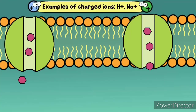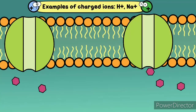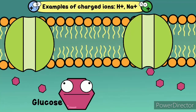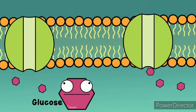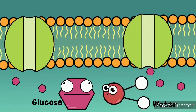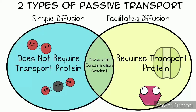Charged ions often require a protein channel in order to pass through. Glucose needs the help of a transport protein to pass through. In osmosis, for water to travel at a fast rate across the membrane, it passes through protein channels called aquaporins. These are all examples of facilitated diffusion, which is a type of passive transport and moves with the concentration gradient of high to low concentration.